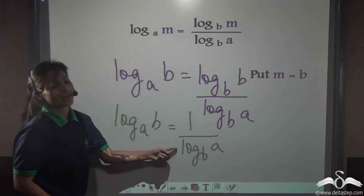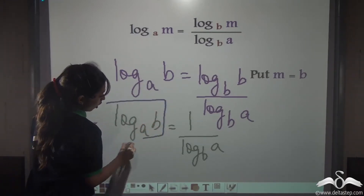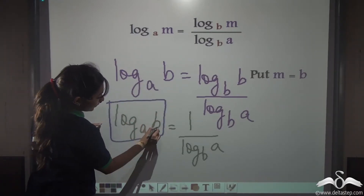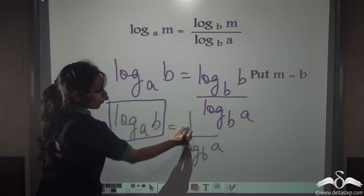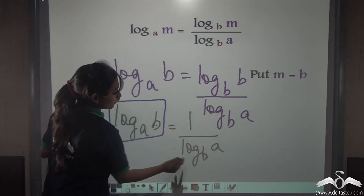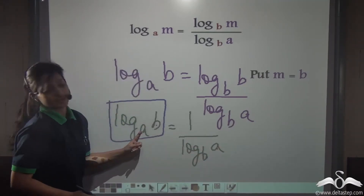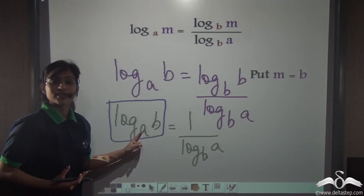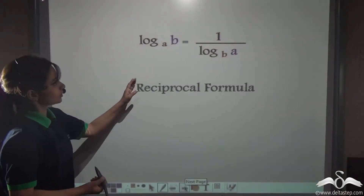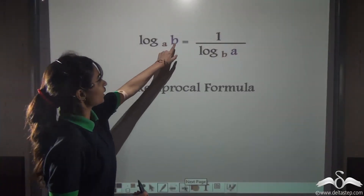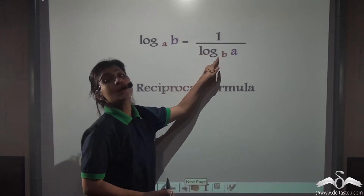This is actually what we wanted. Log B to the base A is equal to 1 by log A to the base B — here both have interchanged their places. This is what we call the reciprocal formula: log B to the base A is equal to 1 by log A to the base B.